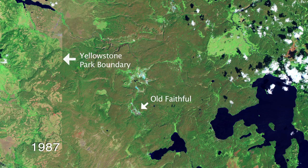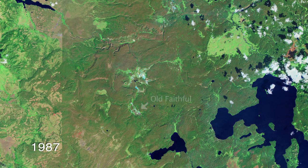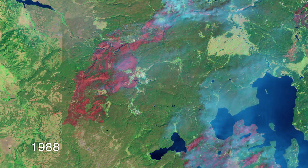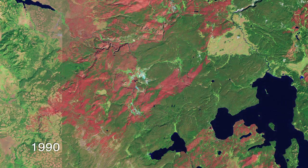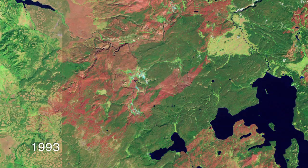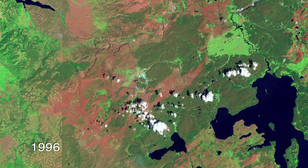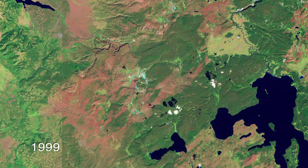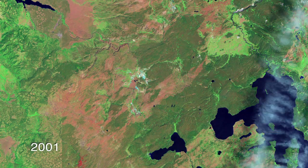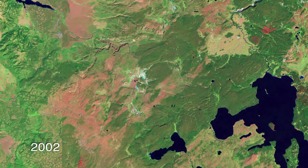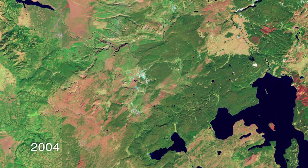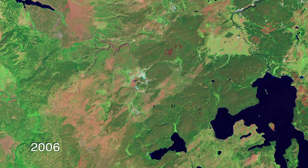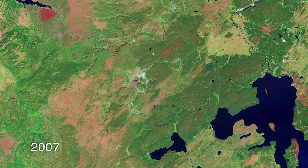In these images, the healthy vegetation is dark green — that's the sign of tall, healthy forest. And what you can see right after the fire is the very obvious fire scar; it's the dark reddish-brown color.